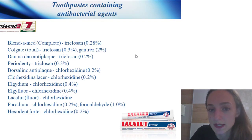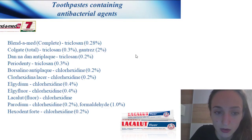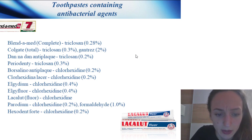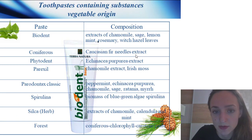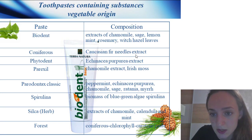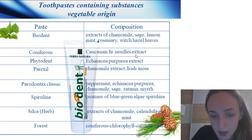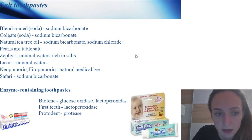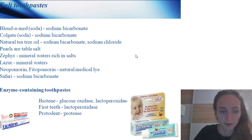Toothpastes containing antimicrobial ingredients: attention — these toothpastes contain strong antiseptics and should be used continuously for 2–3 weeks only, then switch to natural hygiene products. Example: Lacalut Active. Toothpastes with antimicrobial agents: Blendamed Complete, Colgate Total, and anti-plaque products such as Parodent and Lacalut. Toothpastes containing substances of vegetable origin: Biodent with extracts of chamomile and sage, lemon mint, and spirulina — biomass of blue-green algae.